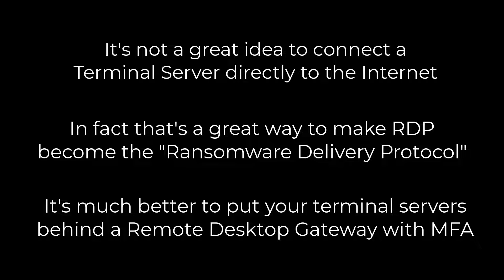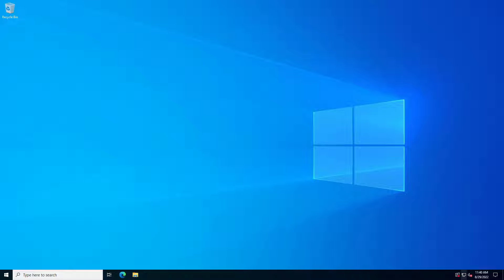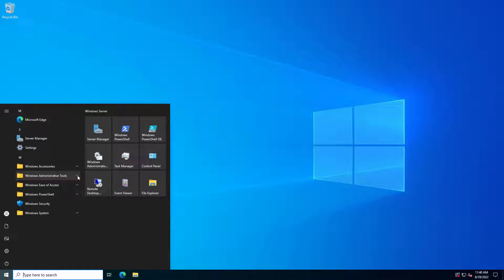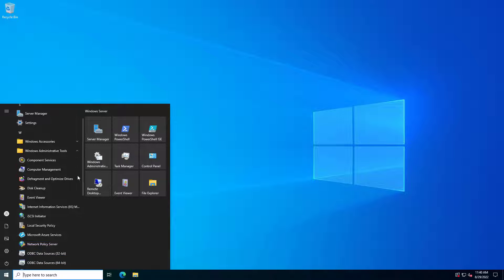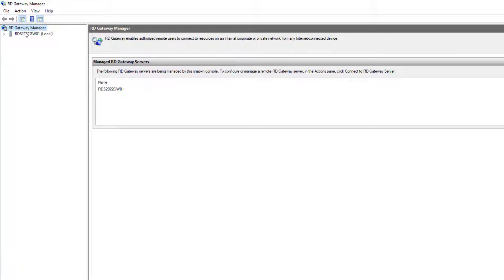You'll want to put your terminal servers behind a remote desktop gateway. If you're a small to medium sized shop with only one remote desktop gateway — not running in high availability mode — make sure you're allowing both TCP traffic over port 443 and UDP traffic over port 3391 to your remote desktop gateway through your firewall. Also, make sure that UDP transport is enabled on your gateway in the remote desktop gateway manager.